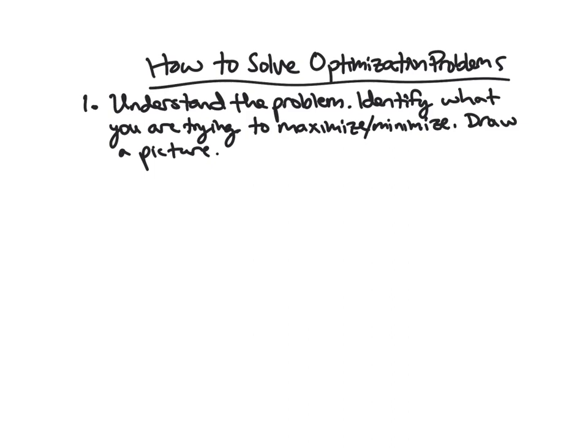So first we want to just understand the problem. This is a maximization or minimization problem. We want to figure out what are we trying to maximize or minimize. And it often helps, not always, but often helps us to draw a picture.